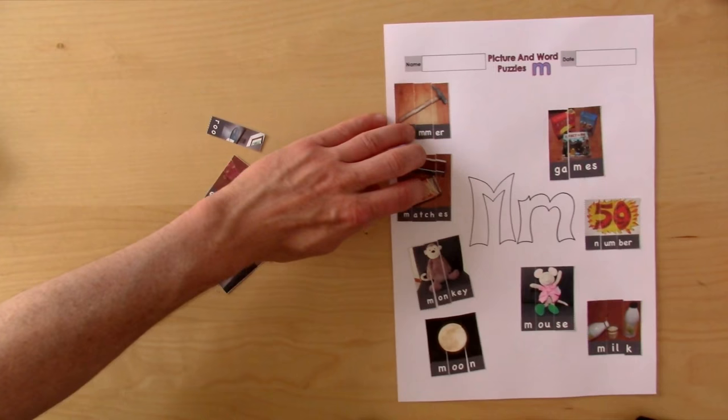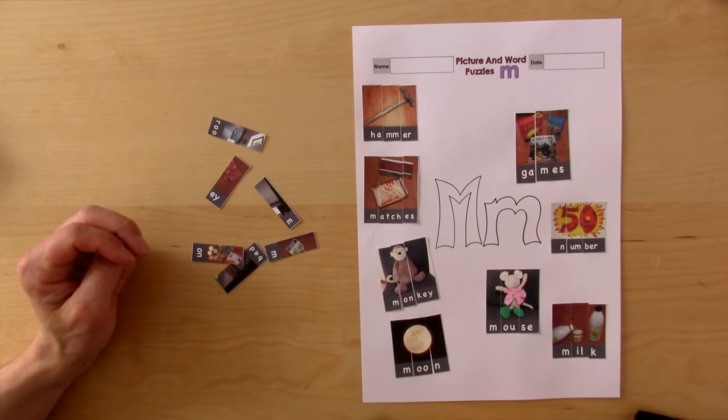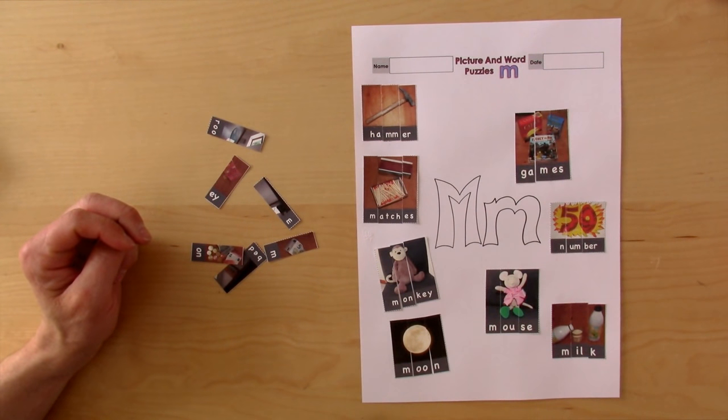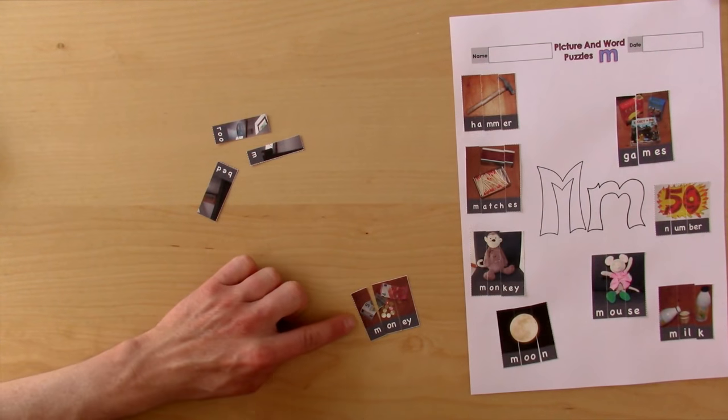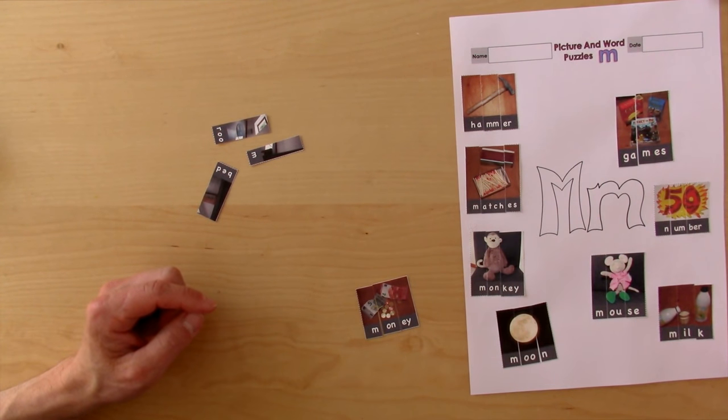Okay, what's that? Monkey. Monkey. How would we say monkey in French? Singe. And what does that say? Money. How do we say money in French? De l'argent.